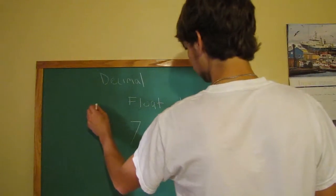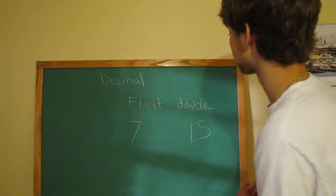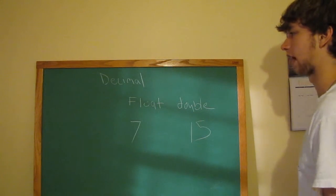Decimal, on the other hand, is, it's accurate. Now, the reason is, it's actually a double stored as a string, and that allows for exact accuracy.